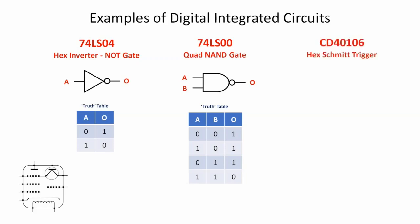Okay, last one is the 40106, which is a hex Schmitt trigger. You probably notice the symbol is very similar to the hex inverter except it contains that symbol.